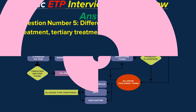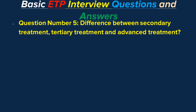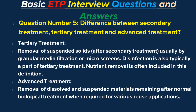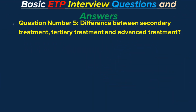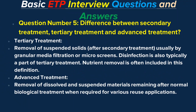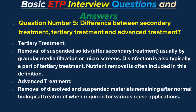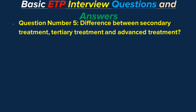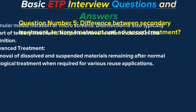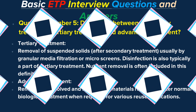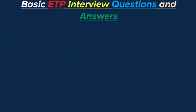Tertiary Treatment involves removal of suspended solids after secondary treatment, usually by granular media filtration or microscreens. Disinfection is also typically a part of tertiary treatment, and nutrient removal is often included in this definition. Advanced Treatment is the removal of dissolved and suspended materials remaining after normal biological treatment when required for reuse variation.